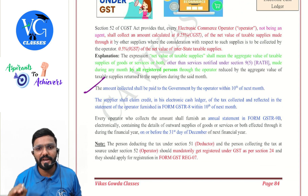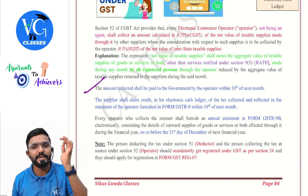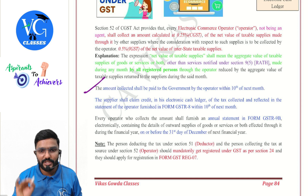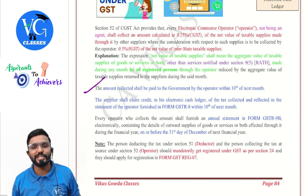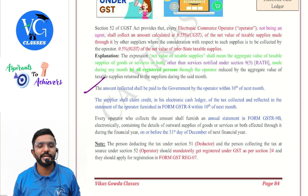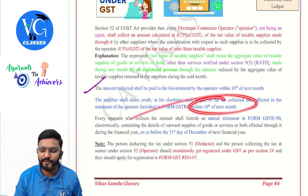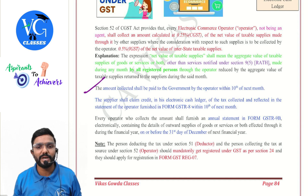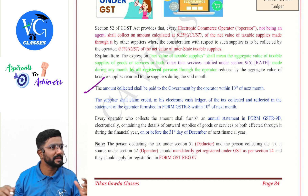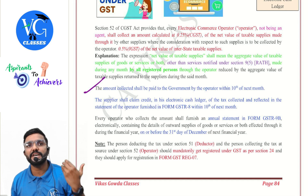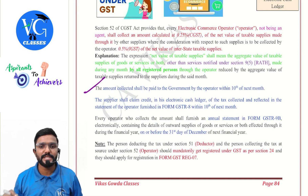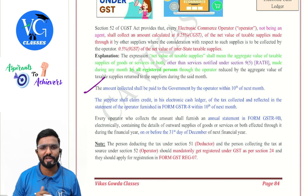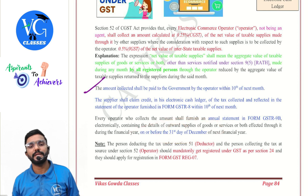The amount collected shall be paid to the government by the operator within the 10th of next month. The supplier shall claim credit in his electronic cash ledger of the tax collected and reflected in the statement of the operator furnished in Form GSTR-8 within the 10th of next month. Every operator who collects the amount shall also furnish an annual statement in Form GSTR-9B electronically, containing details of outward supplies of goods or services or both affected through it during the financial year, on or before 31st December of the next financial year.